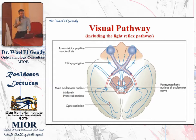The light reflex passes in the optic nerve to the chiasma and then to the optic tract, and then leaves the optic tract to go to the pre-tectal nucleus in the posterior midbrain. The pre-tectal nucleus gives bilaterally to the main oculomotor nuclei on both sides, and then from the oculomotor nucleus, the fibers to the pupil go to the ciliary ganglion, and from the ciliary ganglion to the constrictor pupillae in the pupil, giving you the reflex for pupillary constriction.